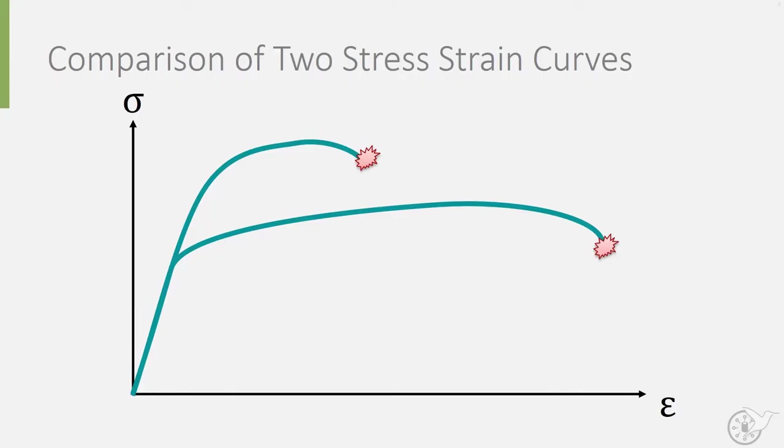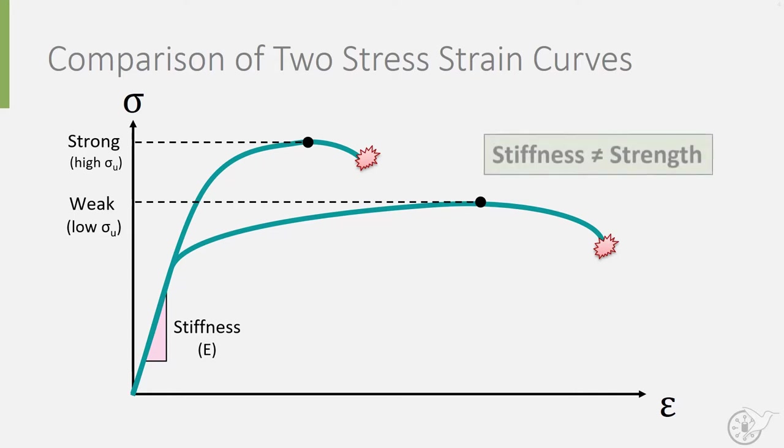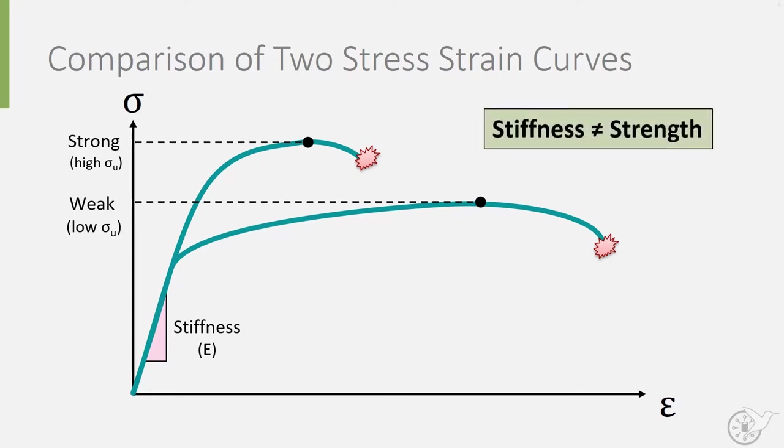If we take another look at the stress strain curve, you can see two curves plotted here. One curve has a high ultimate stress and one has a much lower ultimate stress. However, both curves have the same linear slope and therefore the stiffness is the same. So the slope of the stress strain diagram indicates how flexible or stiff one material is compared to the next, but it says nothing about its strength.